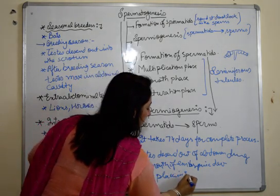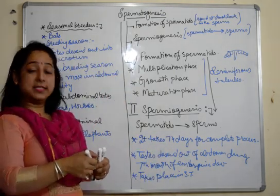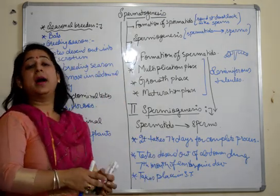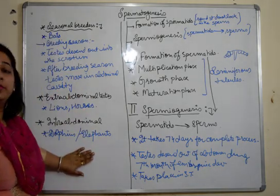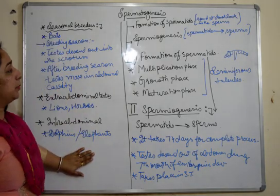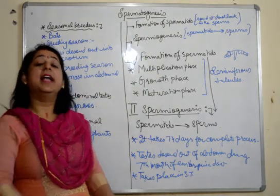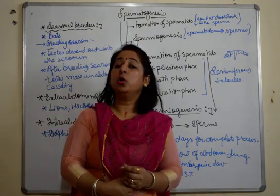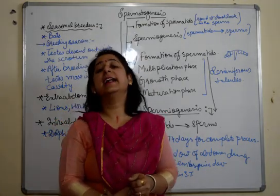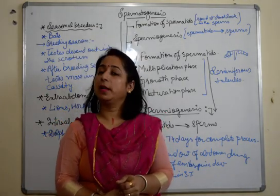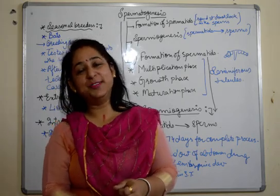This whole process also takes place in the seminiferous tubules of the testes. So this is all about spermatogenesis. We discussed seasonal breeders, extra-abdominal and intra-abdominal organisms, and the phases of spermatogenesis. In our next video, we'll talk in detail about the formation of spermatids and the process of spermiogenesis. Keep watching, liking, sharing, and subscribing. Thank you.